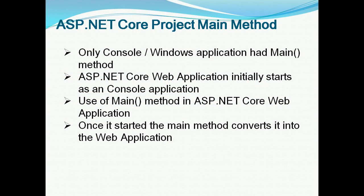A .NET console and Windows application creates a static void main method. That method is the entry point used to execute the project. If you create a web application, there is also a main method. ASP.NET Core web application uses the main method as the initial start, similar to a console application method.